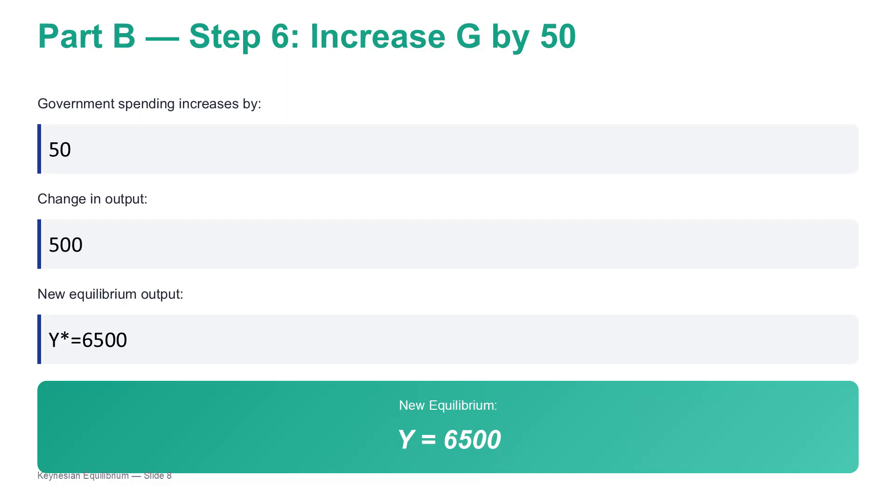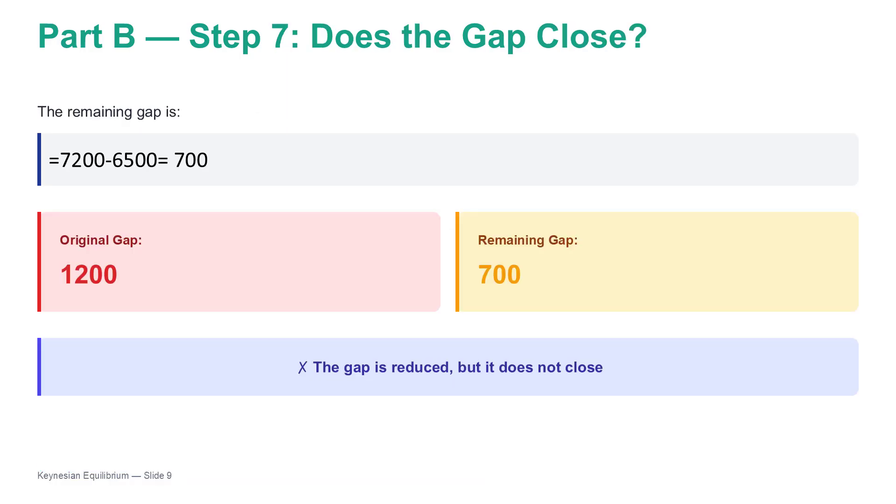Okay. Let's test it out. Imagine the government is a little cautious and decides to increase spending by a modest 50 million shekels. Delta G is 50. And taxes stay the same. With a multiplier of 10, that change in output, delta Y, should be 10 times 50, which is 500. A 50 million shekel injection creates 500 million shekels of new output. So our new equilibrium output goes from 6,000 up to 6,500. That's a big improvement. Unemployment would fall. Things would feel better. But have we solved the problem? Not quite. The goal is 7,200. We're at 6,500. We're still short. The remaining gap is 7,200 minus 6,500, which is 700. The policy helped, but it was insufficient.